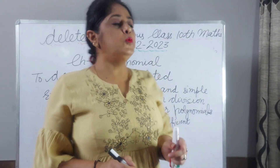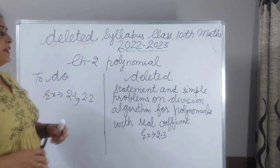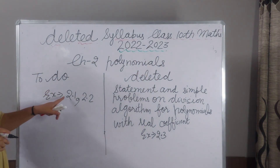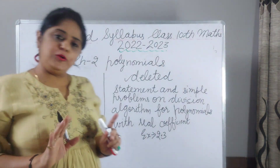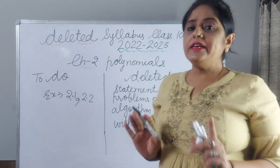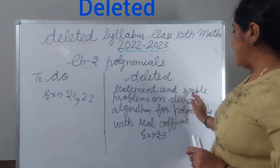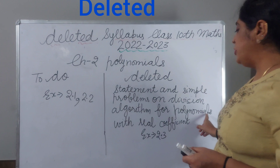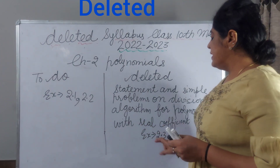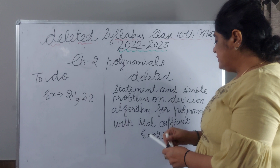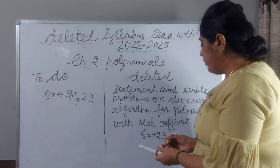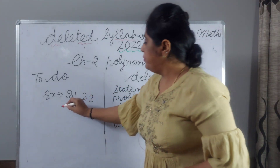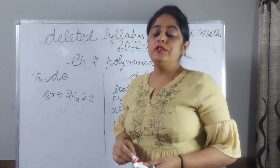Now in Chapter 2, Polynomials, you have to do exercise 2.1 and 2.2 only. What is deleted from your syllabus: statement and simple problems on division algorithm for polynomials with real coefficients. Exercise 2.3 you have to not do. Only exercise 2.1 and 2.2.